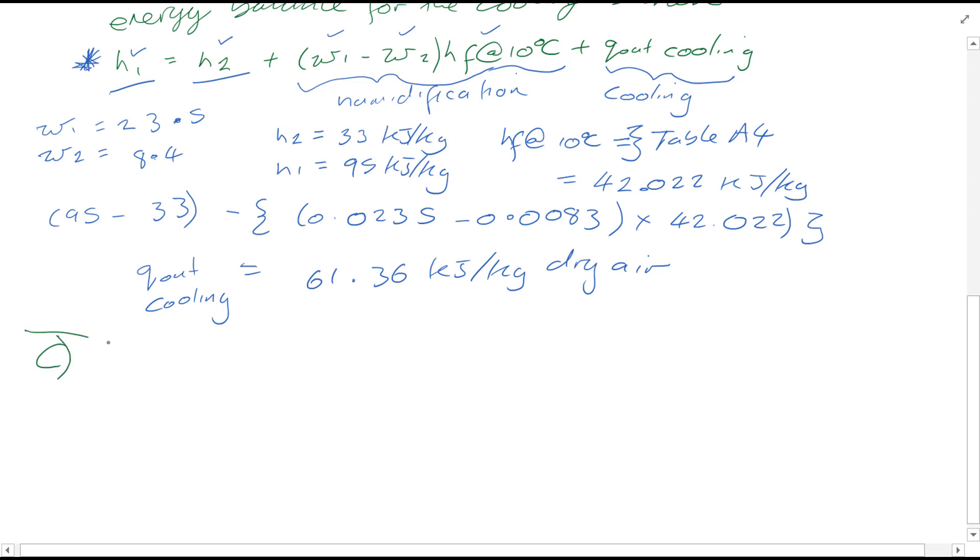Okay, considering part c, this is very straightforward. We want to find out the amount of air supplied in the heating section per unit mass dry air, and q_in through heating, which is quite simply defined as h3 minus h2, which is quite simply 44 minus 33, which is equal to 11 kilojoules per kilogram.